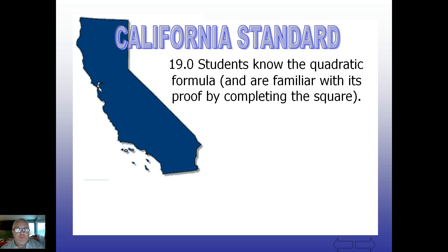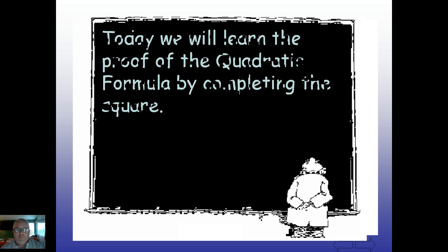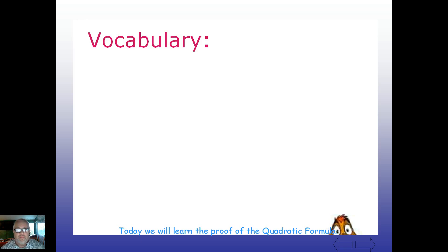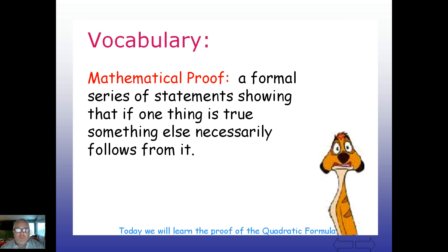Math standards, here we are at 19.0. We finally get to the proof of our quadratic formula. And let's see what we can do here. So a mathematical proof, this is a formal series of statements showing that if one thing is true, something else necessarily follows from it. If one thing is true, then something else is going to be forced to come after it. So let's take a look here at our very first proof.